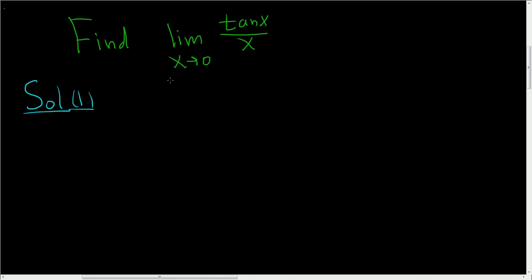The tangent, let's write it in terms of sine and cosine, right? If you plug in zero, you get tangent of zero over zero, so you get zero over zero. That's no good.